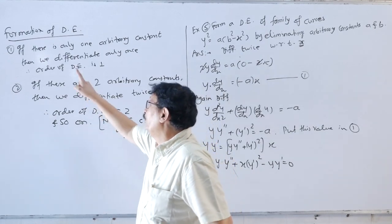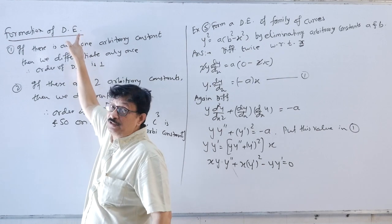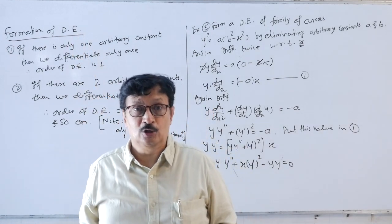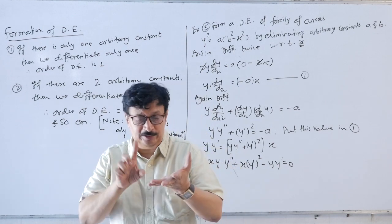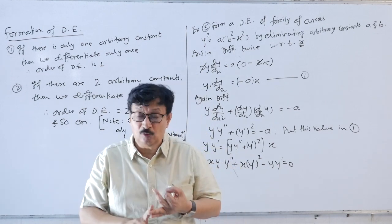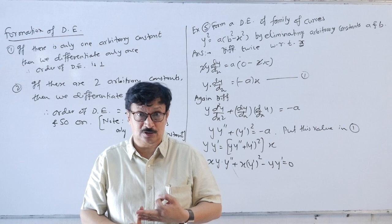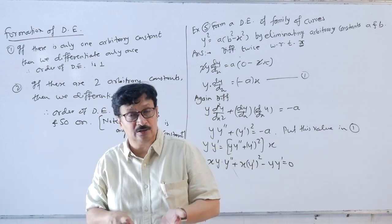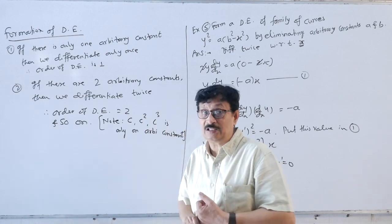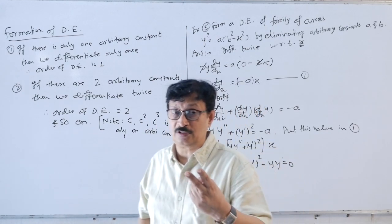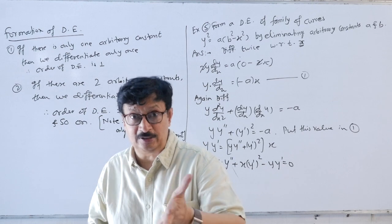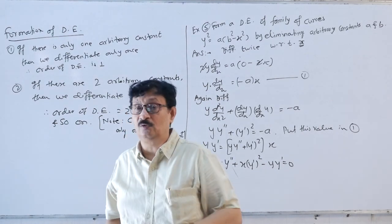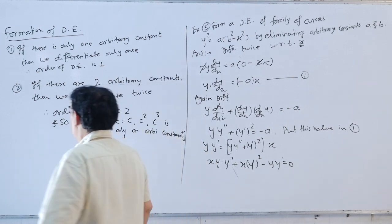Now we will go to a new topic: formation of differential equations. You will be given a solution of the differential equation — an equation involving x and y, some fixed constants, and some arbitrary constants a, b, c. Fixed constants like 2 or minus 5 are fixed, but a, b, c, d, k etc. are called arbitrary constants.